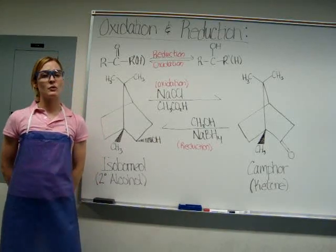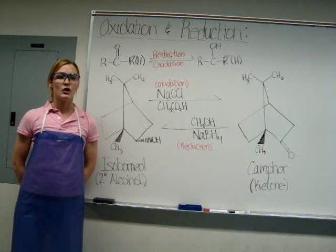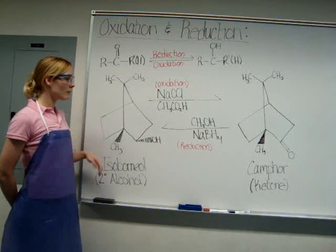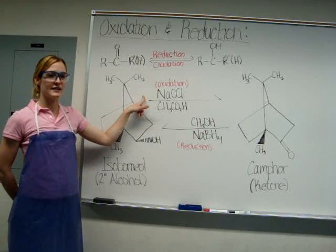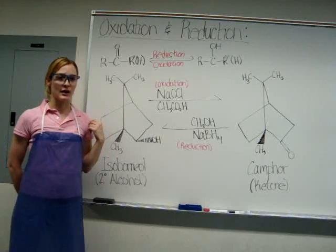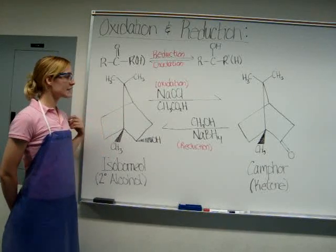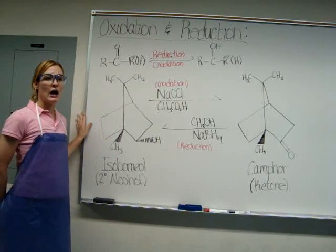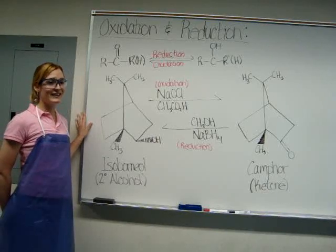For those of you doing the oxidation reaction, you will be using sodium hypochlorite as your oxidizing agent. Sodium hypochlorite is the reagent in Clorox bleach. This will oxidize your secondary alcohol isoborneol rapidly and in high yield.